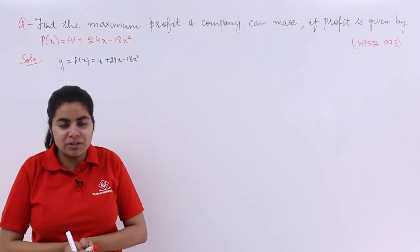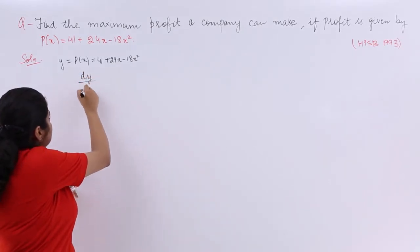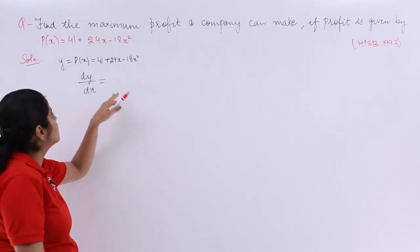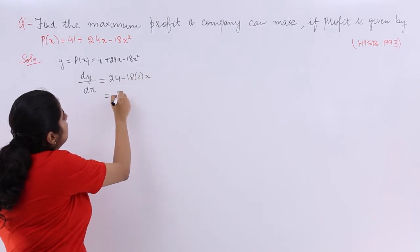So first derivative would be dy/dx which is equal to - the constant's differentiation with respect to x is 0 - so it is 24 minus 18 multiply by 2x which is nothing but 24 - 36x.